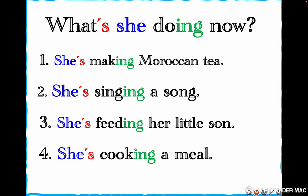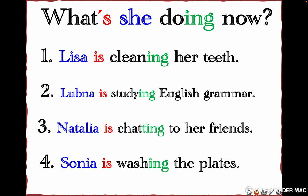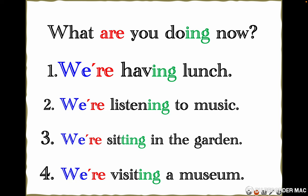She's making Moroccan tea, she's singing a song, she's feeding her little son, she's cooking a meal. Let's repeat: 'What's she doing now?' — She's making Moroccan tea, she's singing a song, she's feeding her little son, she's cooking a meal. Now we answer with a person's name: Lisa is cleaning her teeth, Lubna is studying English grammar, Natalia is chatting to her friends, Sonia is washing the plates.